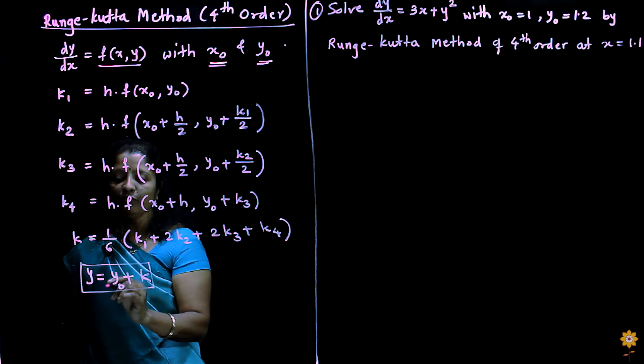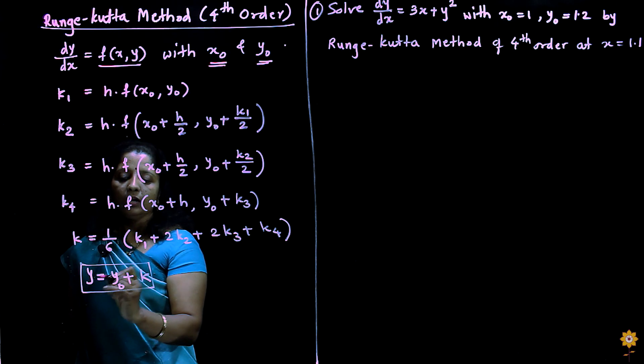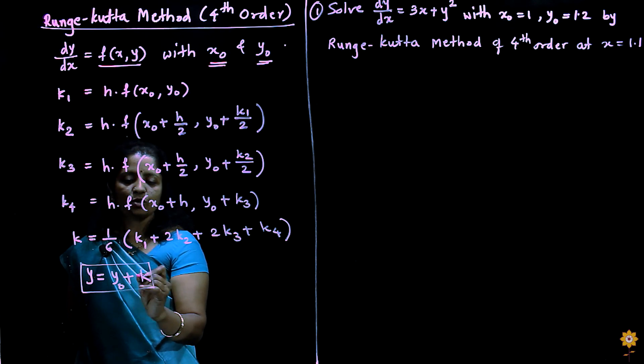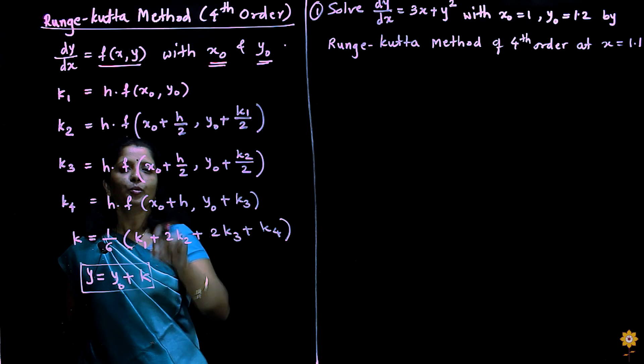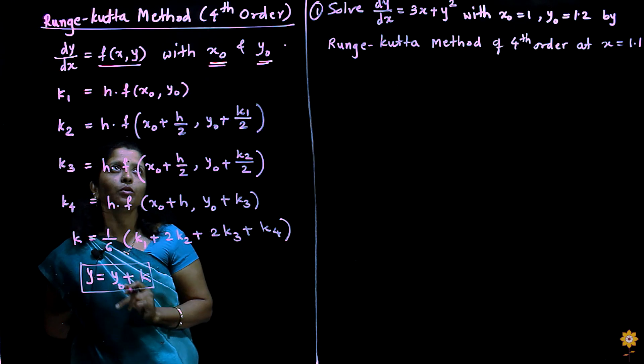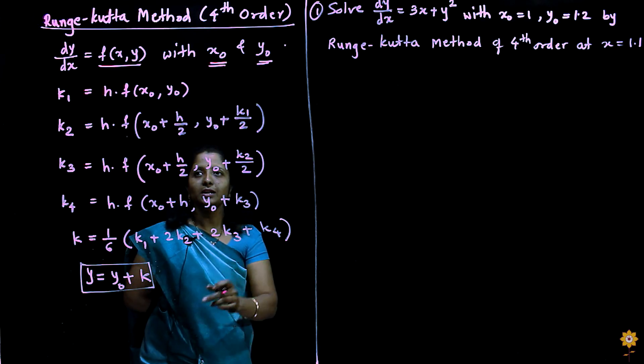With the help of k, we can get y equal to y0 plus k. So these are the formulas for the Runge-Kutta method of fourth order.